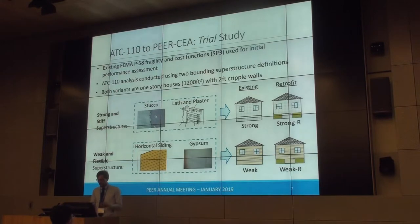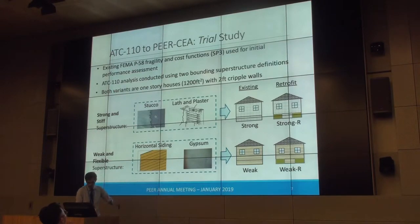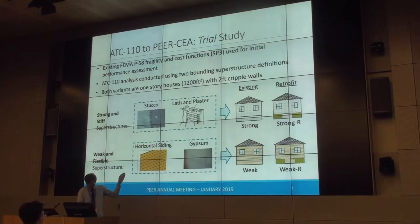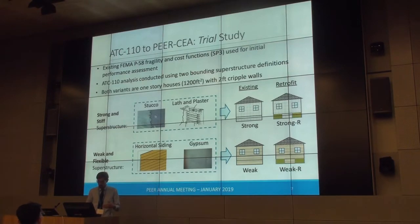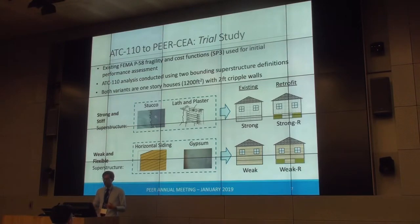Just going through the trial study — I was happy to hear Kelly already explained the range of strengths from the ATC 110 project. These are preliminary results using the existing P58 tools available; in this case we're using SP3. The main idea is to look at some results with a strong and stiff superstructure, which was used to put the most demands on the cripple wall during guideline development, and then also the very weak and flexible superstructure comprised of horizontal siding and gypsum — used for understanding the potential of shifting damage upstairs.